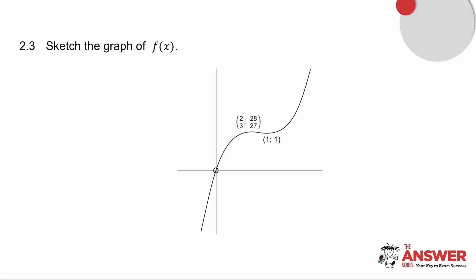2.3 asks you to sketch the graph. You know the x-intercept is 0, you've got the coordinates of both turning points, you know a is positive, so you know the shape of the graph, and there is the graph of f of x.